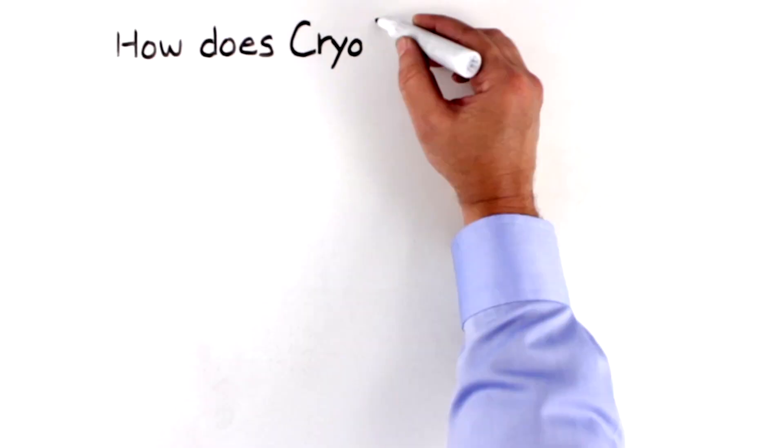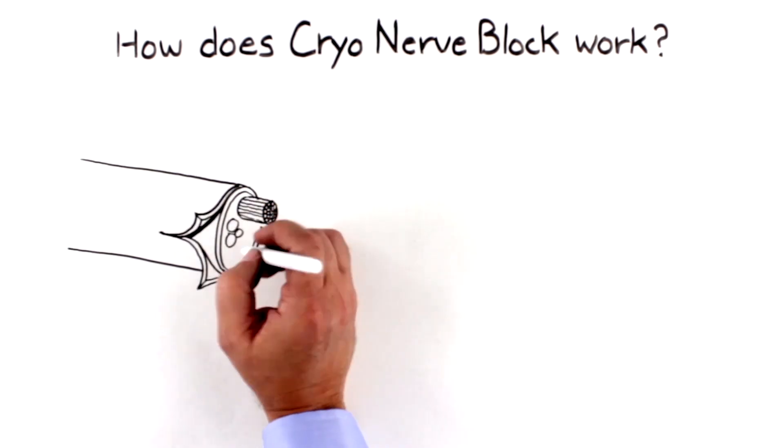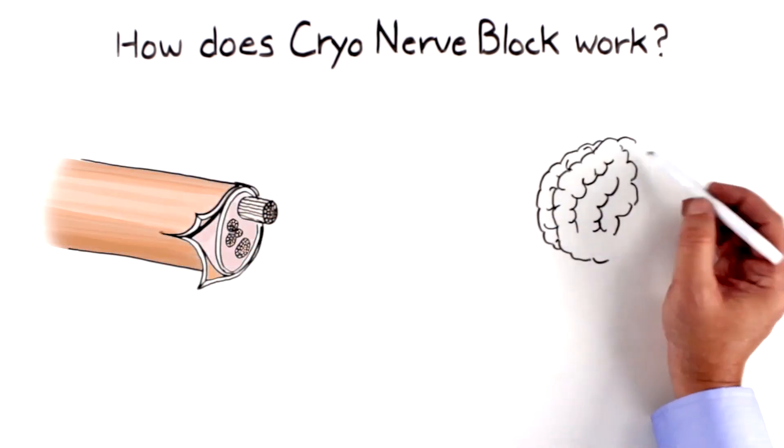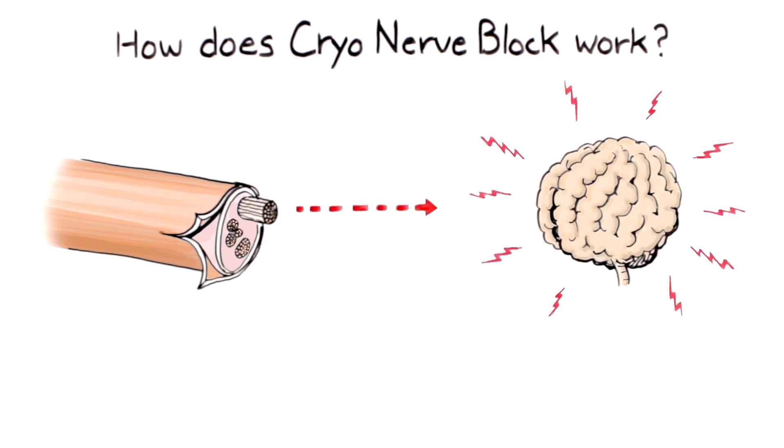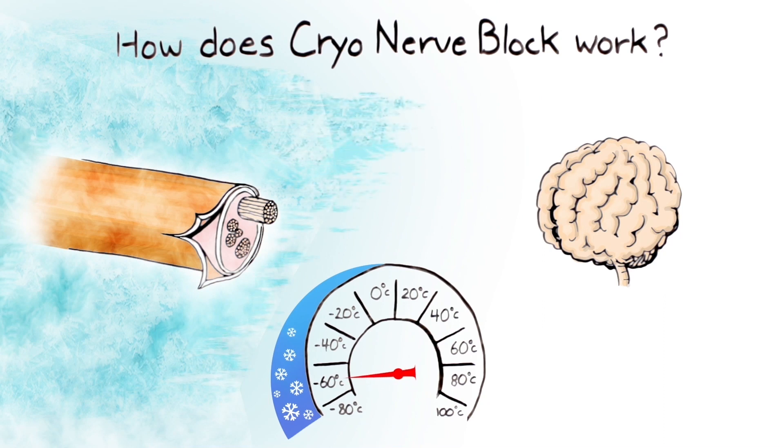So how does cryo-nerve block work? Your nerve has two main parts: an outer protective structure and the actual nerve that transmits the pain to your brain. By freezing the nerve at a specific temperature, the nerve is disabled without damaging the protective structure. This allows the nerve to regrow right back where it was before.